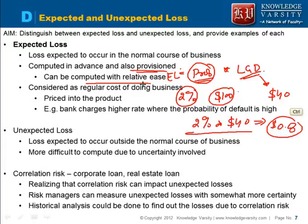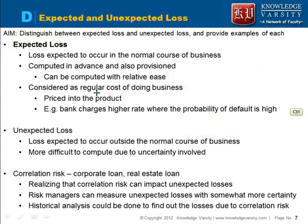Banks take this expected loss in their profit and loss statement. These losses are considered a regular cost of doing business, and companies price this risk into their products. For example, banks will charge a higher rate of interest when the probability of default is high.